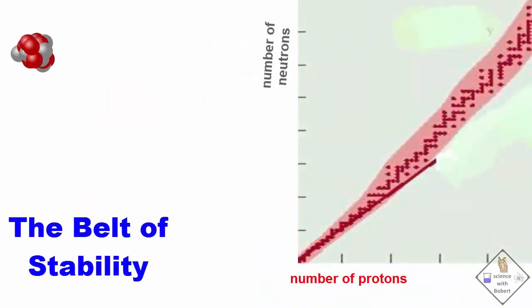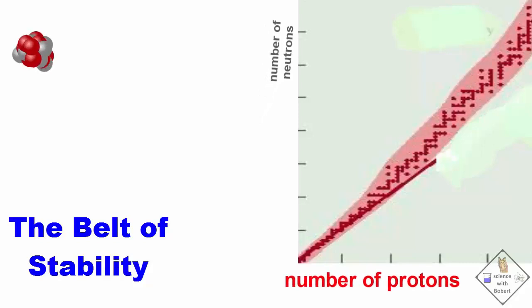All atoms are stable if and only if they have the right number of neutrons. This magic number of neutrons is different for different numbers of protons.